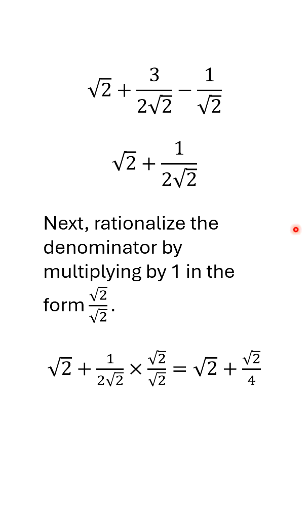So multiplying by 1 in this form, the square root of 2 over the square root of 2, makes this a perfect square. And so, that becomes 2 times this 2 becomes a 4. So we end up with the square root of 2 plus the square root of 2 over 4.